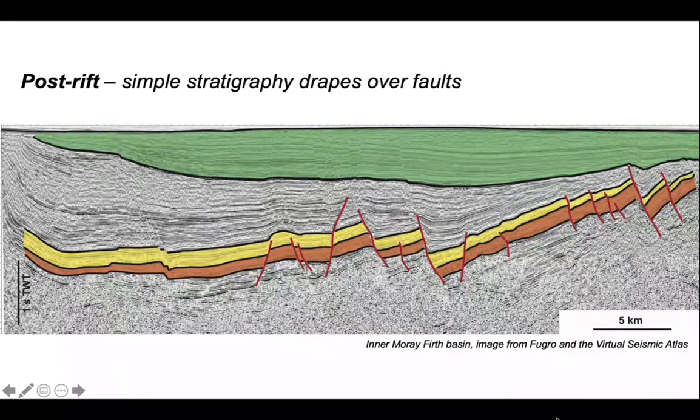Let's put on some post-rift and we can see that this younger part of the post-rift is a simple drape that sags across the whole basin area.